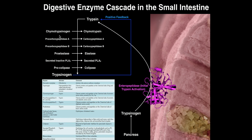So hopefully this makes a little bit of sense. I'm not going into the function of these proteins right now — all I'm talking about is the cascade itself. Just remember: enteropeptidase in the membrane of the enterocytes does the initial activation of trypsinogen into trypsin. Then this trypsin can activate all of these other proteins, in addition to activating more trypsinogen into trypsin, which is our positive feedback cycle.